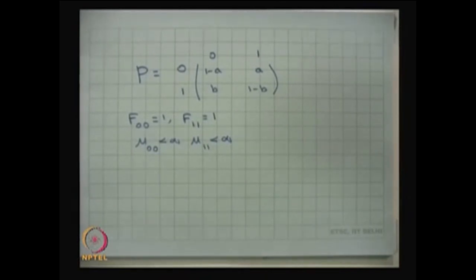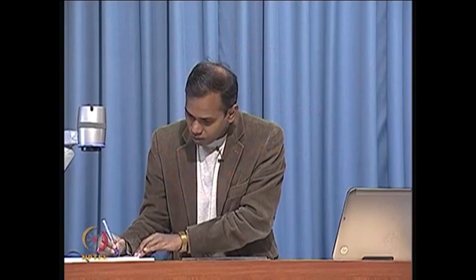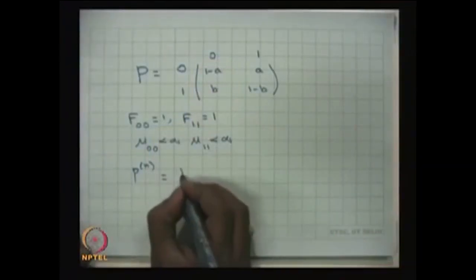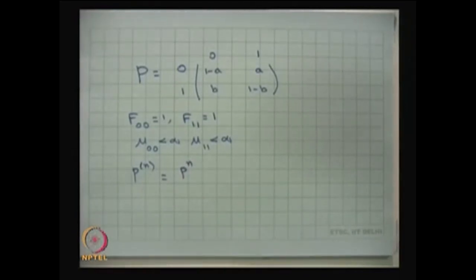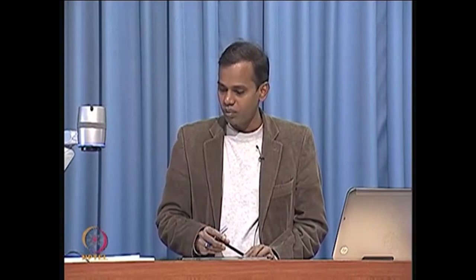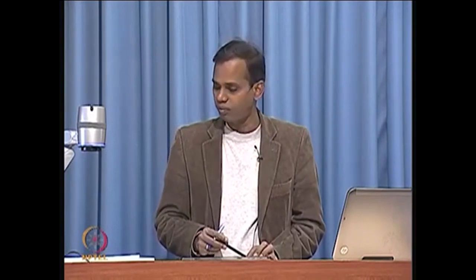Our interest is the limiting distribution, which means finding the limit as n tends to infinity of P^n, where P^n is the n-step transition probability matrix, equal to the one-step matrix raised to the power n. To find this, you can use either the eigenvalue and eigenvector method, or the induction method — finding P^2, P^3, and so on to determine P^n by mathematical induction.